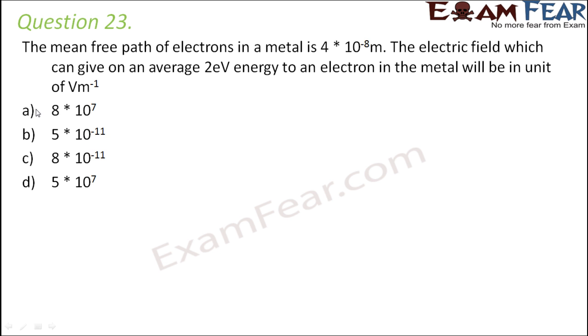Now before that, let us quickly see what do we mean by mean free path. So it is the average distance traveled by an electron between successive collisions. Now in this question, energy is given as 2 electron volts.